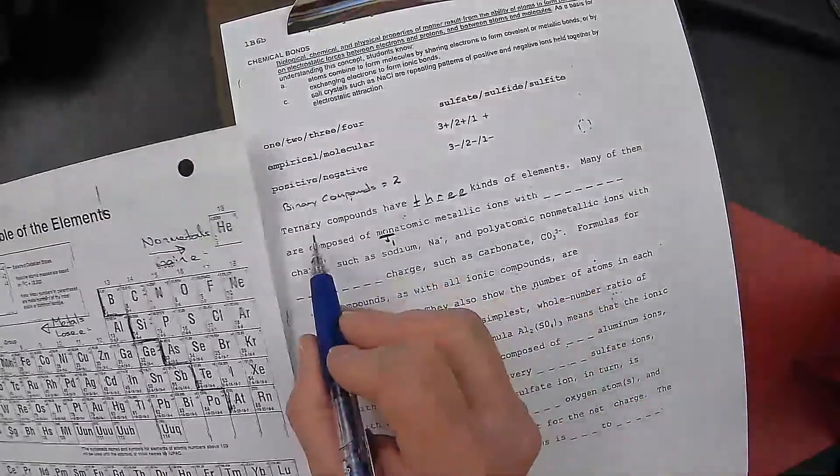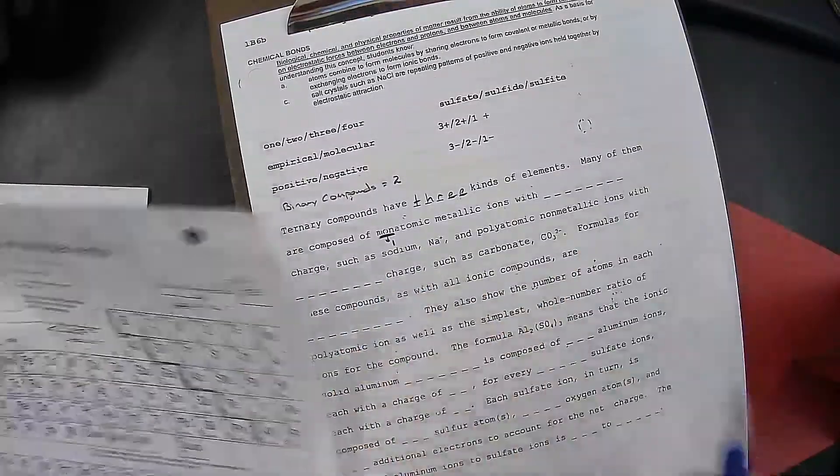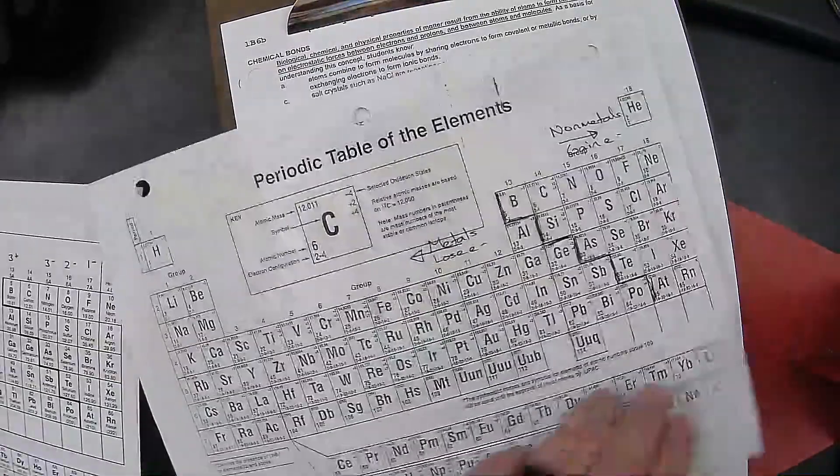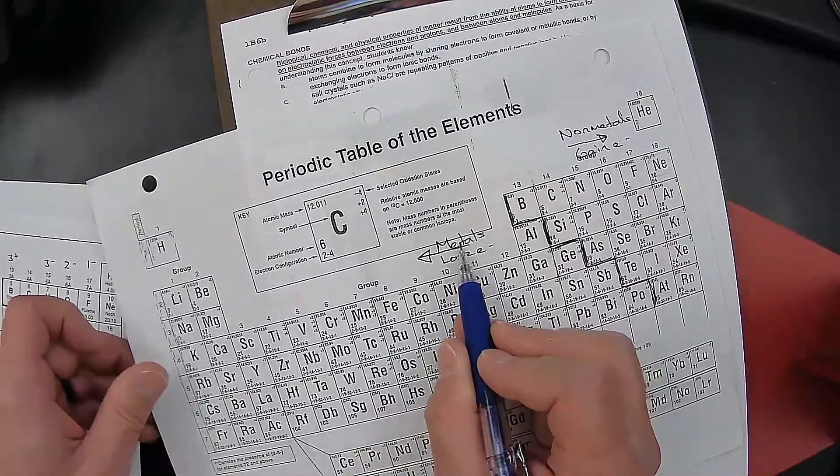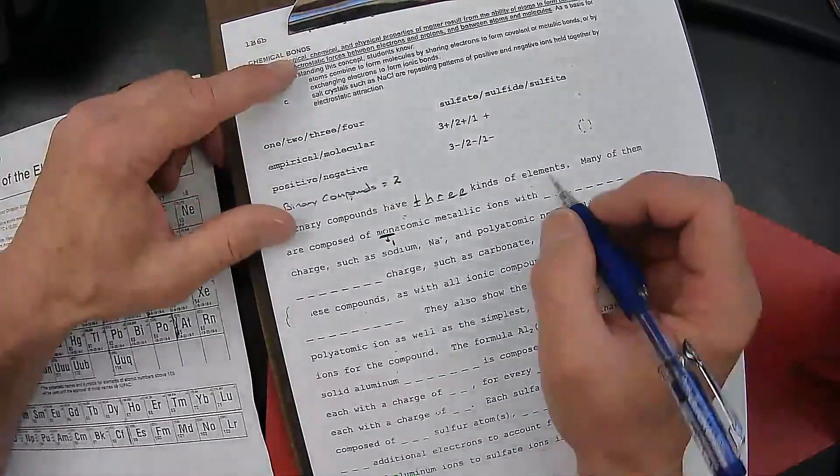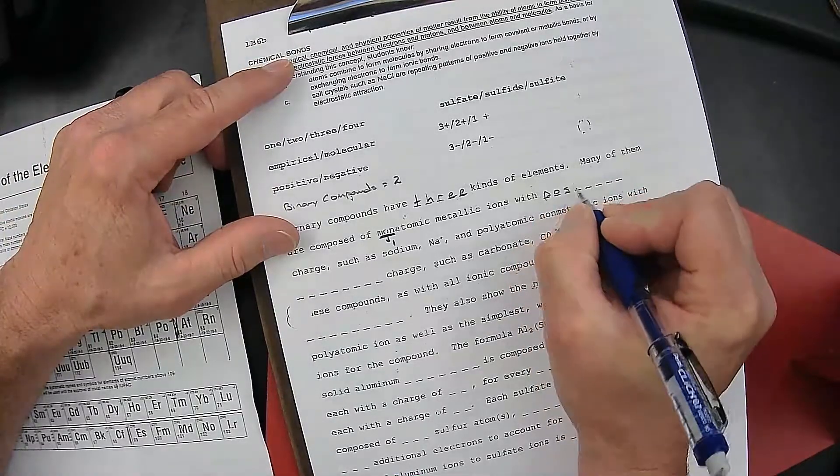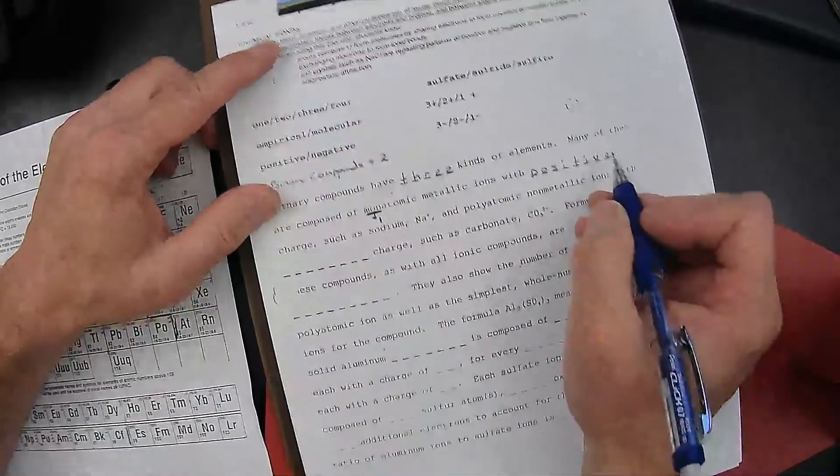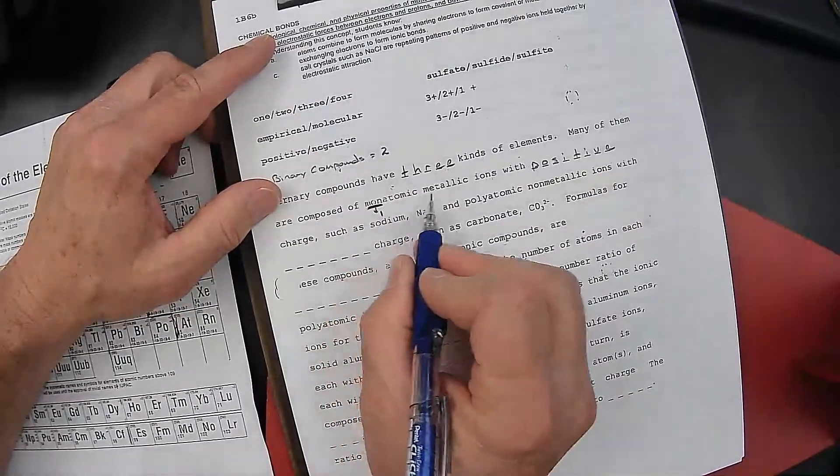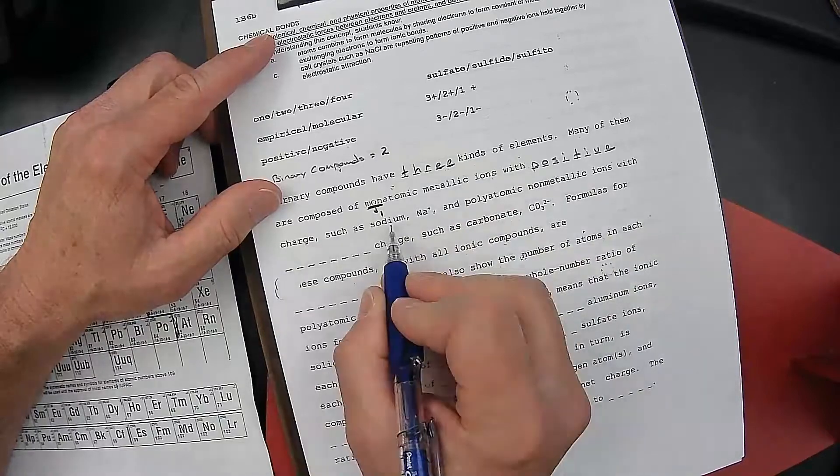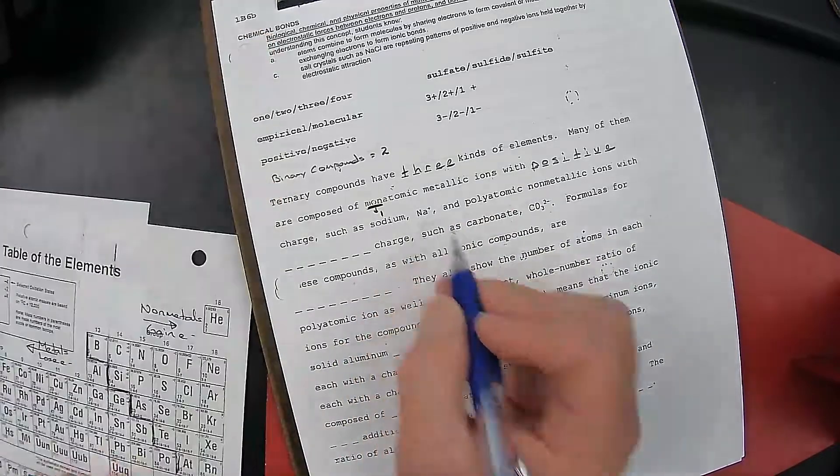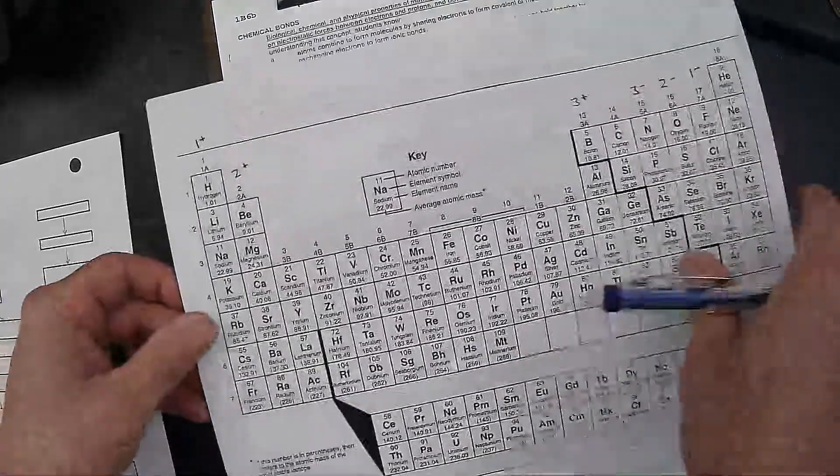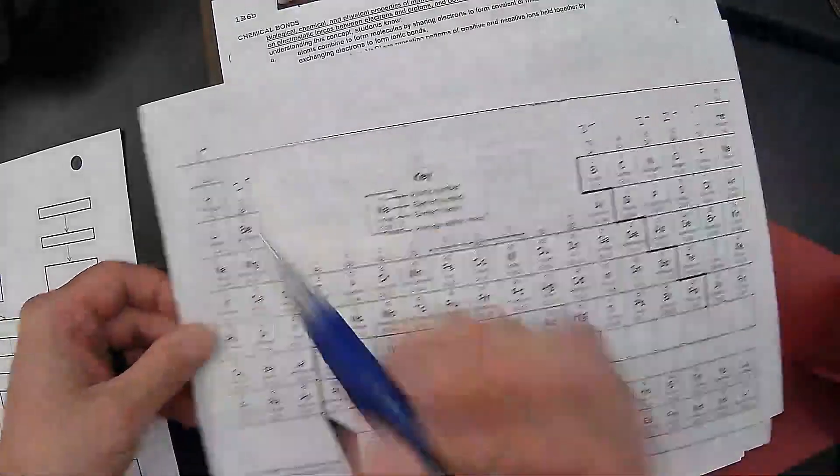So what it's telling us is these ternary compounds, many of them contain one metal atom. And we know that the metal atoms are losing electrons. If those metal atoms are losing electrons, it must have a positive charge, because they're losing negative electrons. Many of them are composed of monatomic, one metal atom with a positive charge, such as sodium Na+, which matches with sodium being in column 1A, with a 1 plus charge.